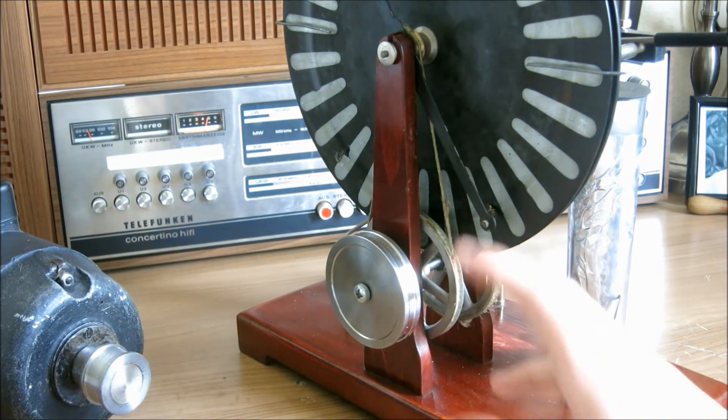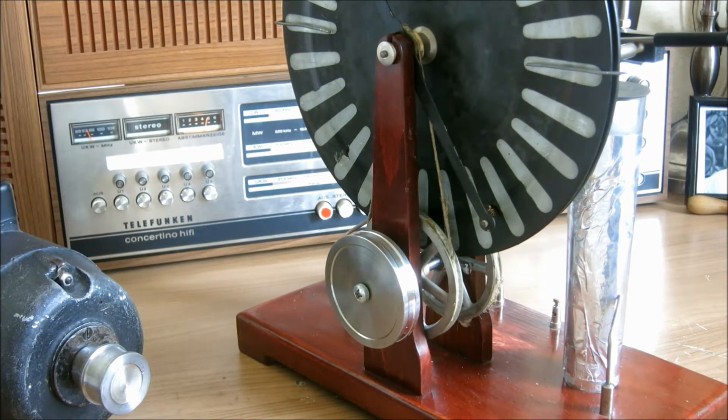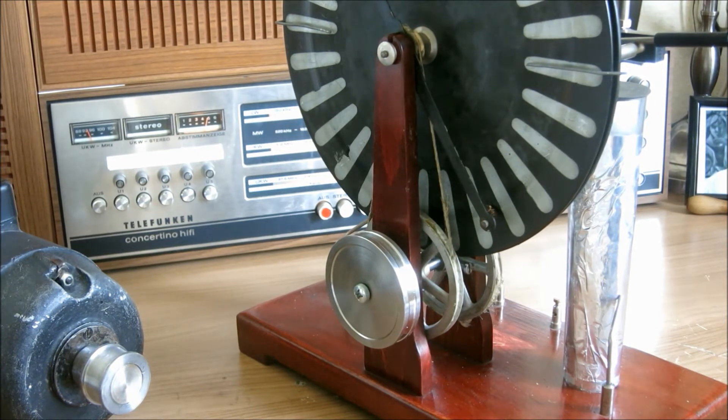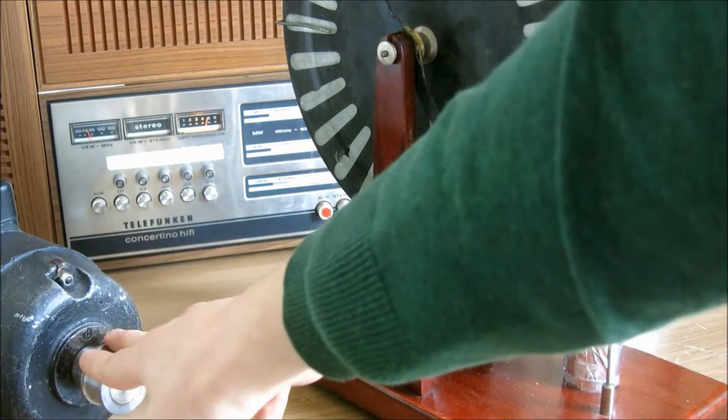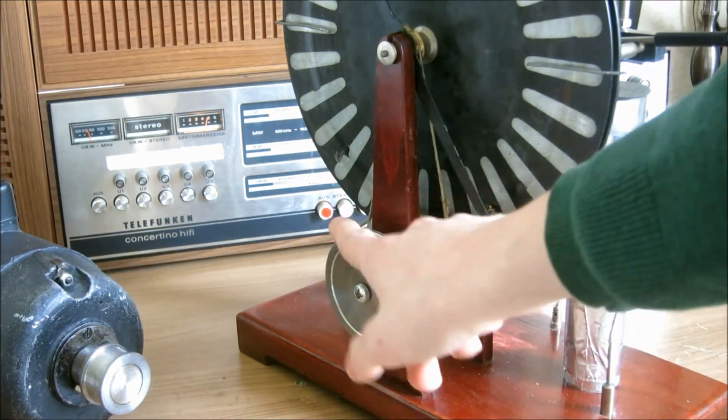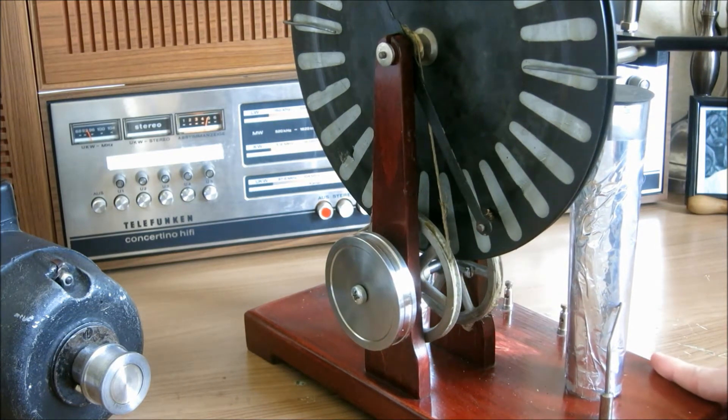And it's about the ratio that I want because these Wimshurst machines seem to have a running speed where they operate the best. And when you get faster than that, it doesn't do anything. So basically, I run this thing on 15 volts now, and that seems to work very perfect for nice big sparks.